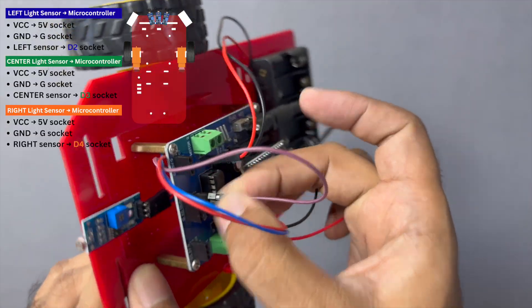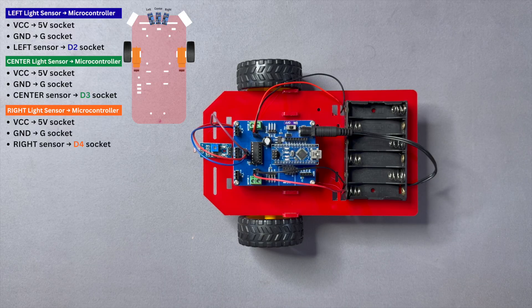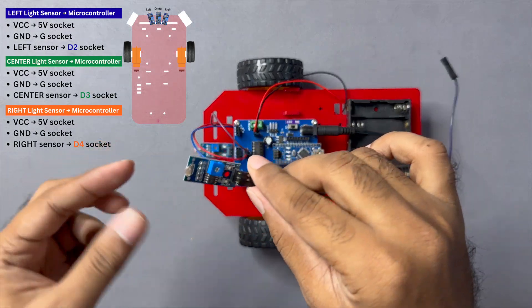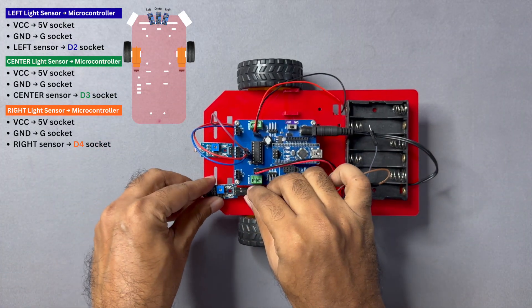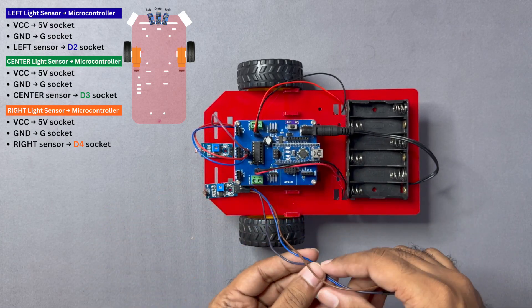Next, repeat the same steps for the left and right light sensor modules. For the left sensor, connect the OUT pin to D2 on the microcontroller and connect the 5V and ground pins to their corresponding pins.